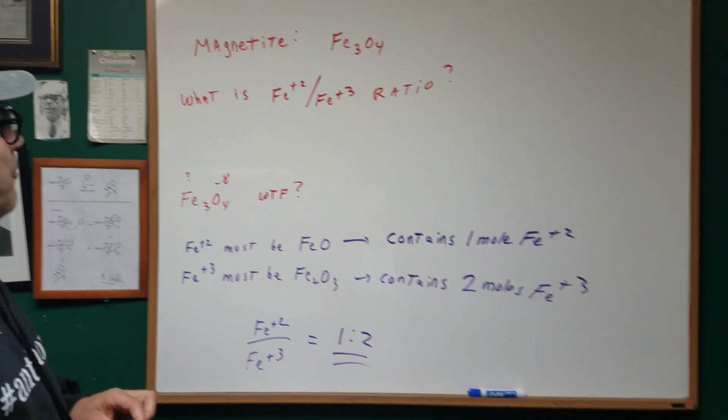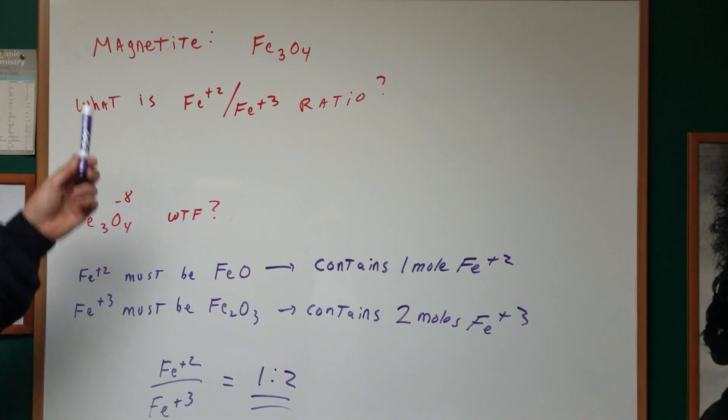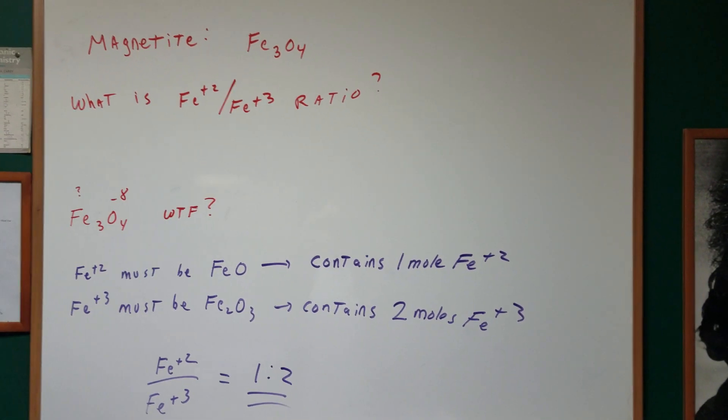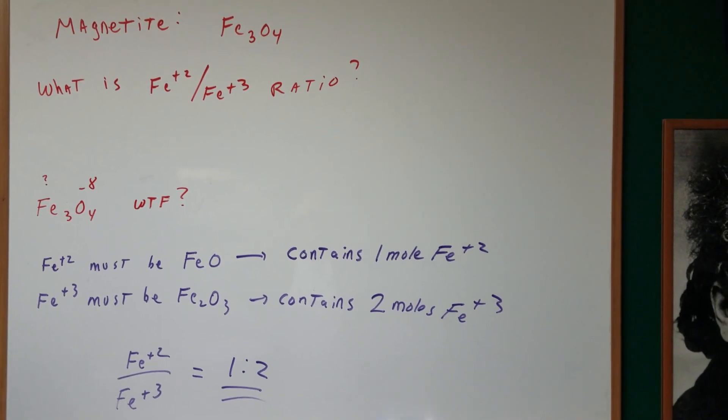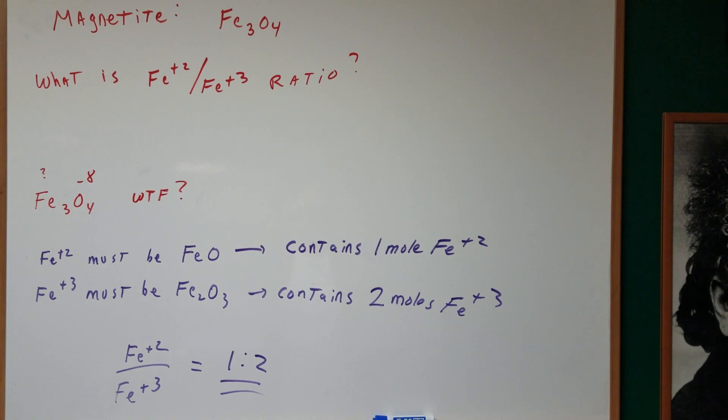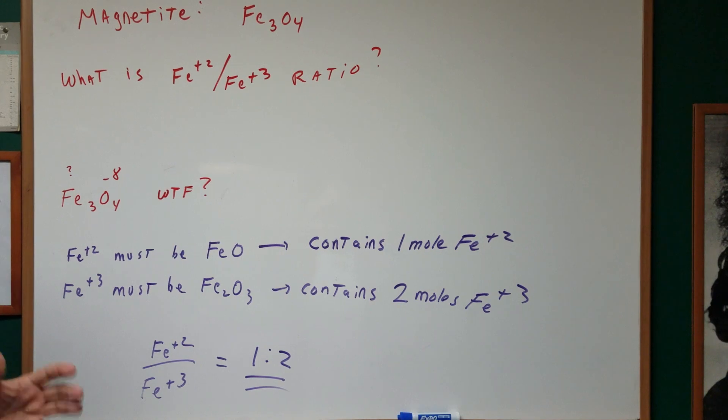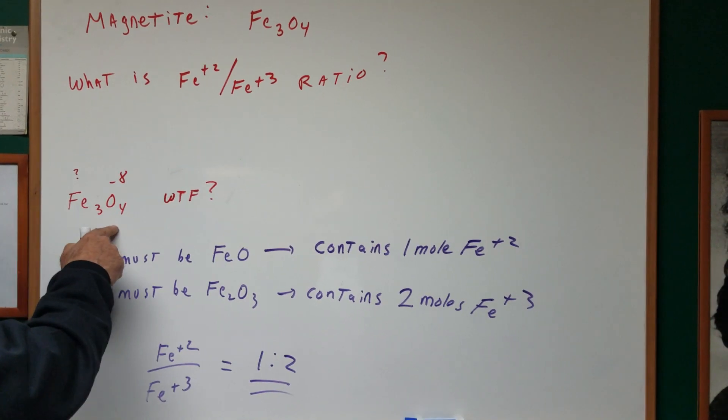There is an element, or I should say there is a mineral known as magnetite, and it's got the formula Fe3O4. And what I want is the Fe+2 and Fe+3 ratio. The first thing when you first looked at this you knew something was very wrong when you looked at Fe3O4.